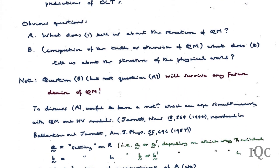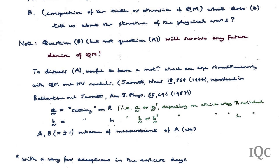I'm going to try to put more emphasis on question B than on question A, but I will try to start off by saying something about question A. To discuss question A, it's rather useful to have a notation which can cope simultaneously with quantum mechanics and with hidden variable models, and perhaps something rather more general than that. There's a nice paper by John Jarrett from way back in 1984, published in Noûs and essentially reprinted in the American Journal of Physics, which does this. I've changed Jarrett's notation somewhat, but basically stuck with his main line of argument.